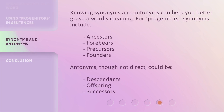Knowing synonyms and antonyms can help you better grasp a word's meaning. For progenitors, synonyms include ancestors, forebears, precursors, and founders. Antonyms, though not direct, could be descendants, offspring, and successors.